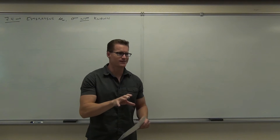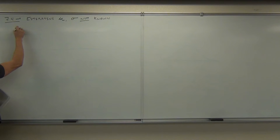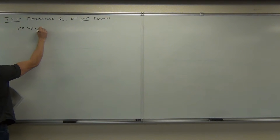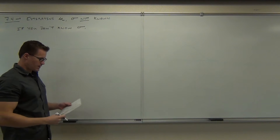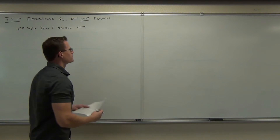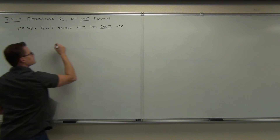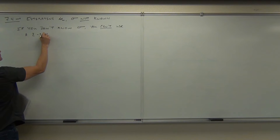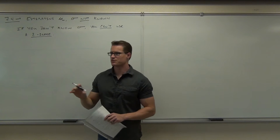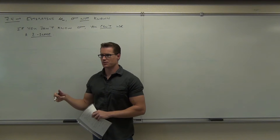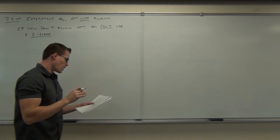The problem is, if you don't know sigma, you can't use a z-score. If you go back and check those requirements from the last section, it said random sample — great. And the next one was: you know sigma. Do we know sigma? Nope. So we can't use a z-score. We can't use a z-critical value. That's a problem for us.